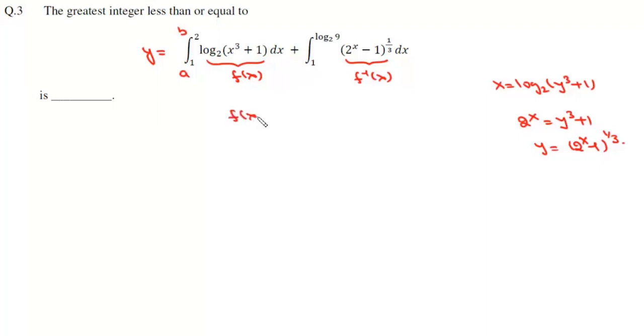then if f(x) is log₂(x³ + 1), then f(1) will be log₂(1), so this is f(a). And f(2) will be log₂(9), and this is your f(b).